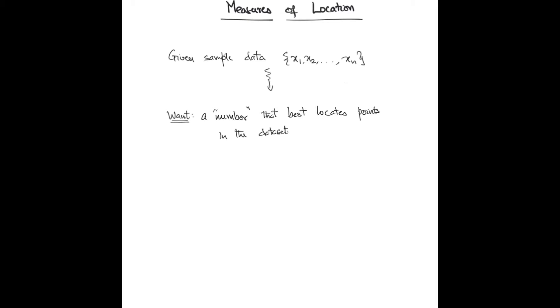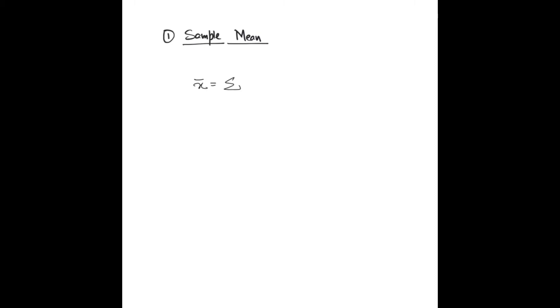We'll consider three main measures of location: the first being the sample mean, then percentiles, and finally trimmed means. The sample mean, also called the arithmetic mean, is defined as the sum of all the sample values divided by the sample size.